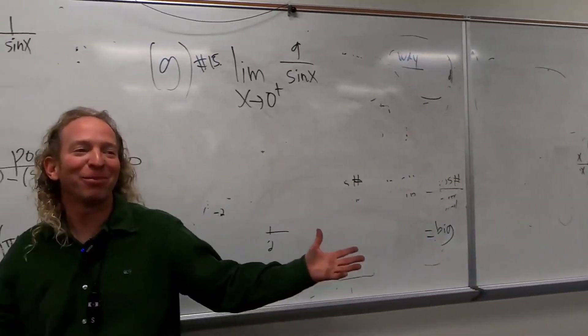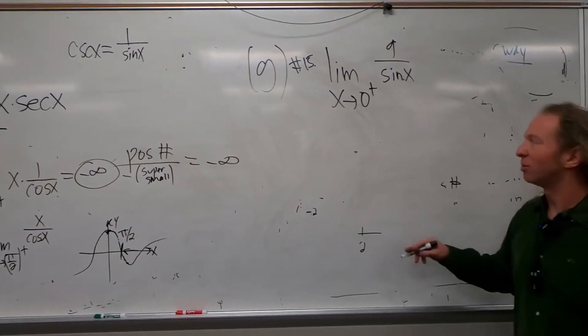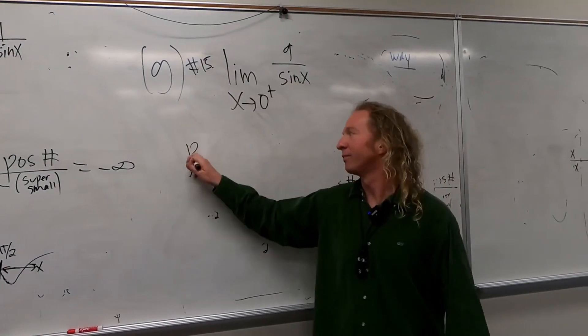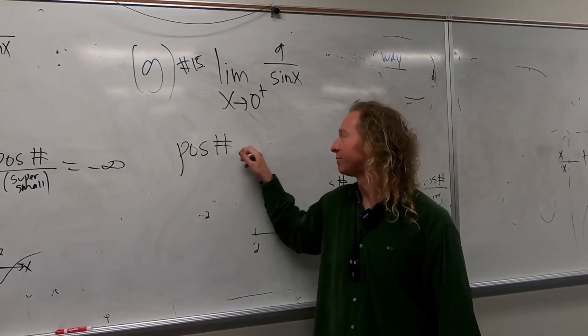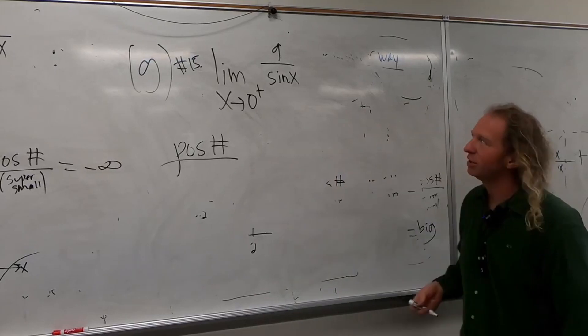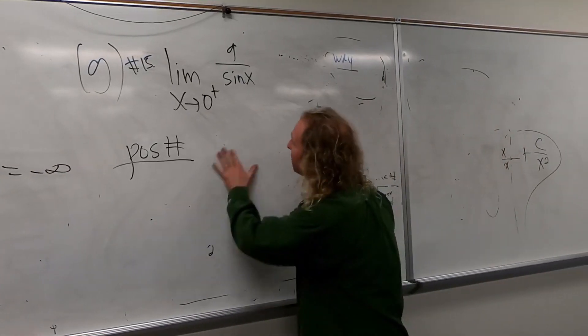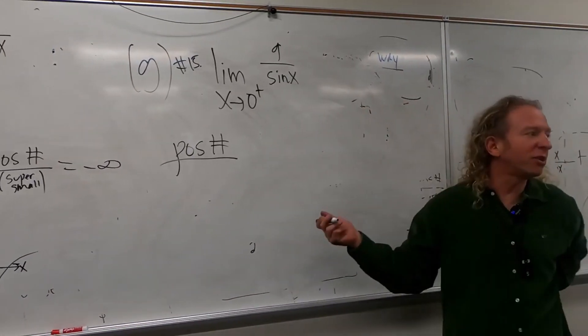So up top, we have a positive number, right? So that's easy. So positive number up top. This one's not as hard as the secant one. And then we have to think about sine on the bottom. Sine of zero is zero.